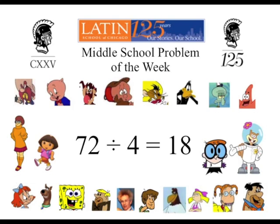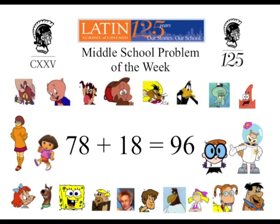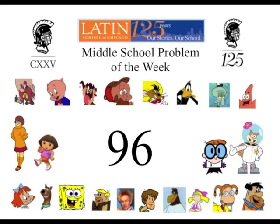But this 18 does not represent the number of students who took the test on the first day, but the number of points each of the other 4 students must be over the new mean in order to bring the mean up to 78. And 78 plus 18 is 96, the answer to this week's Problem of the Week.